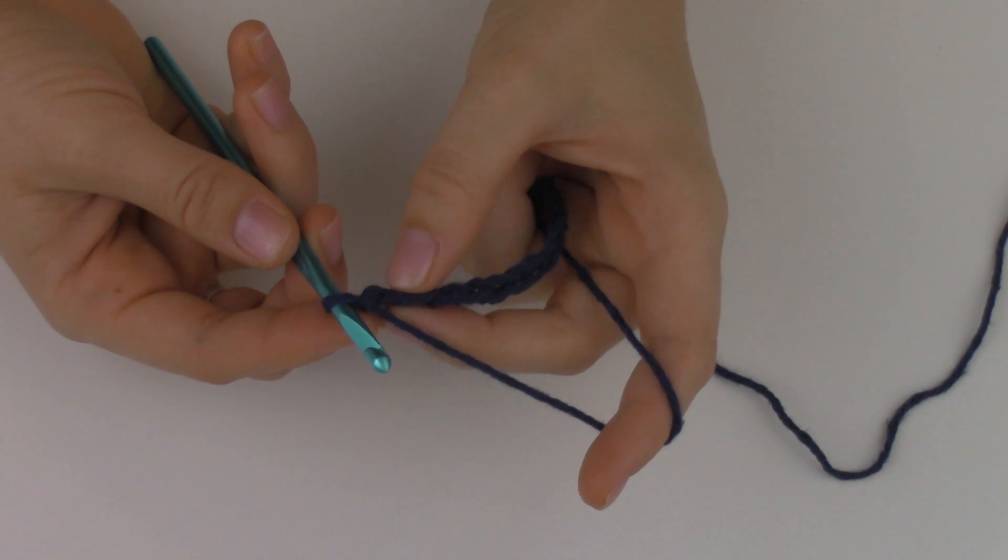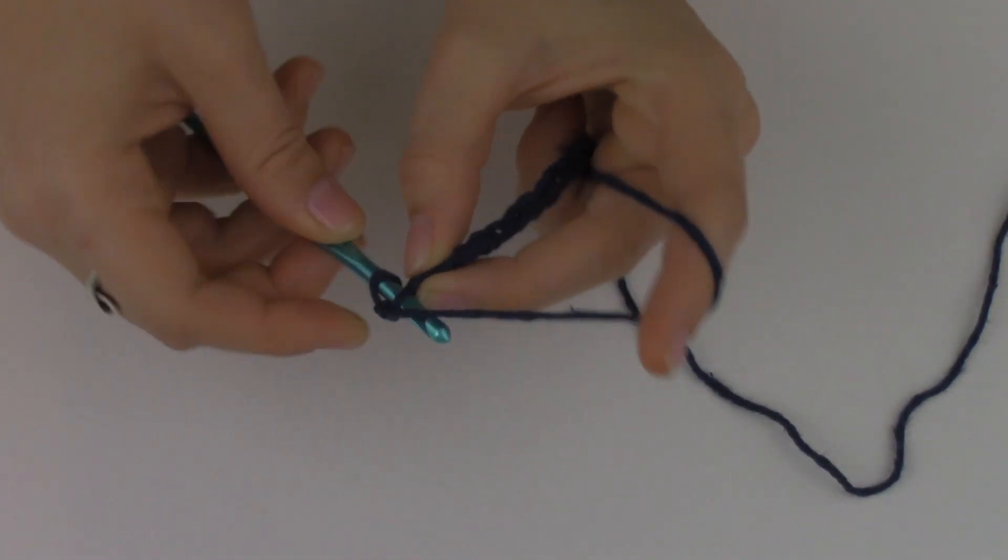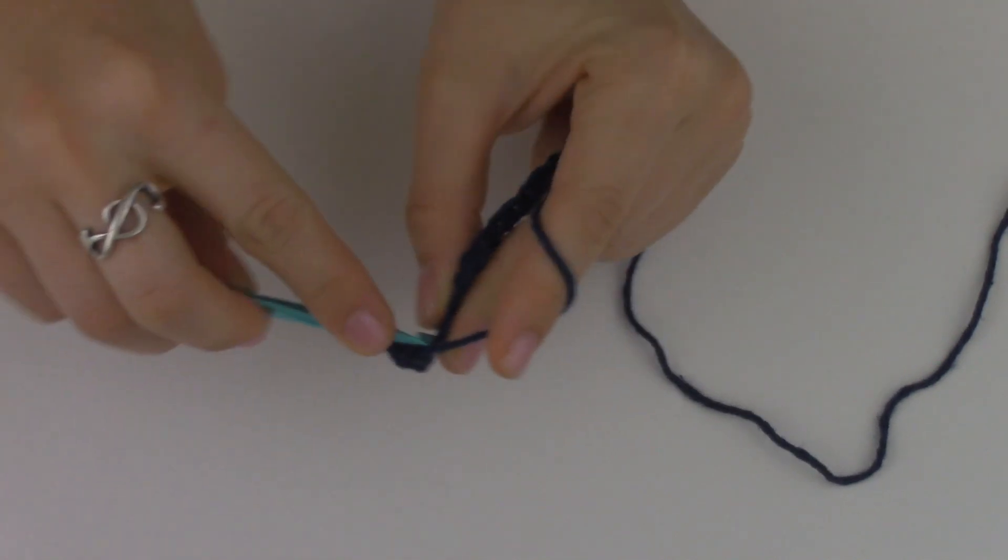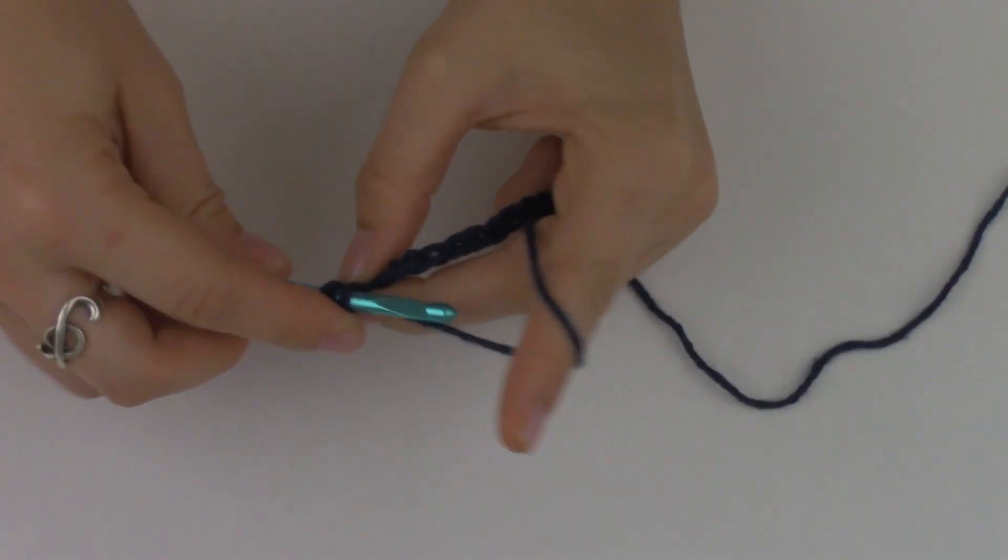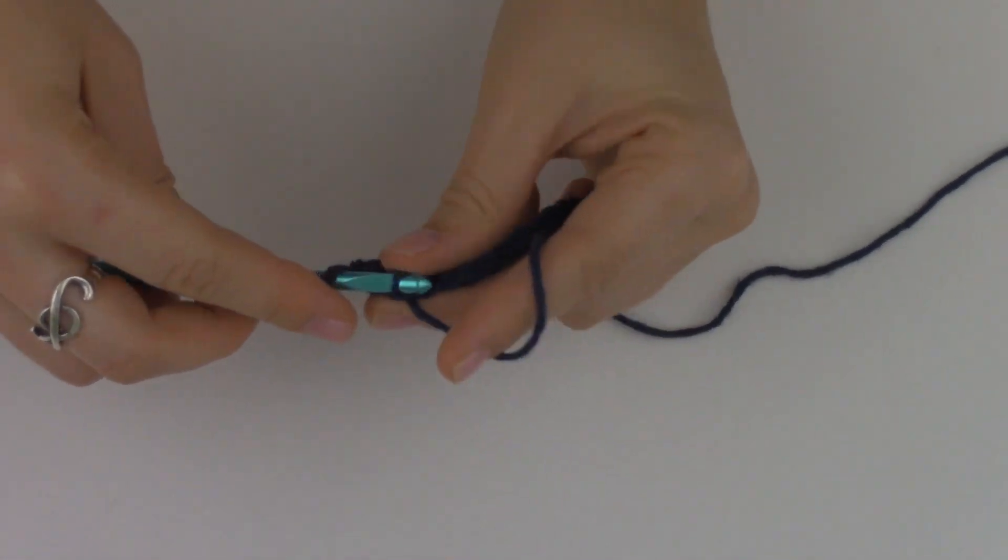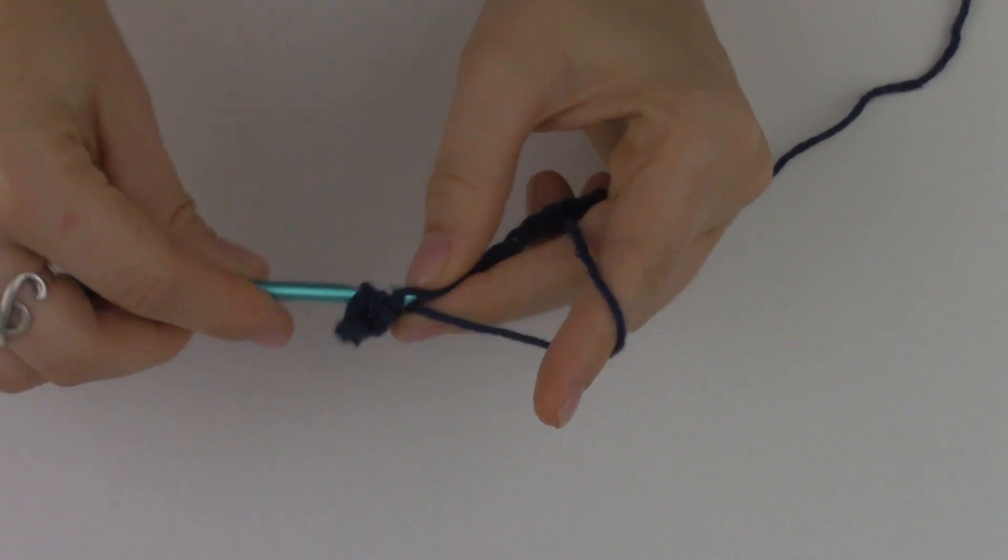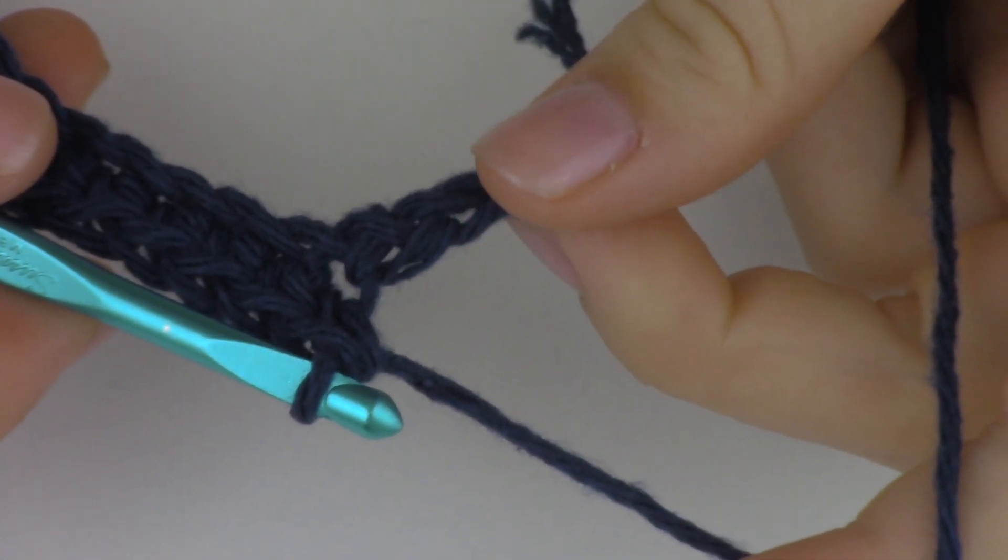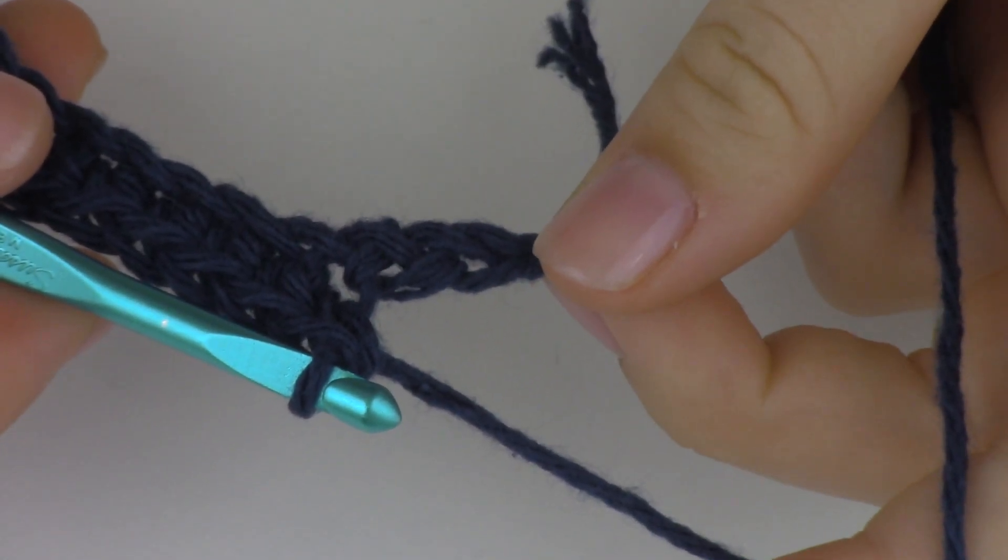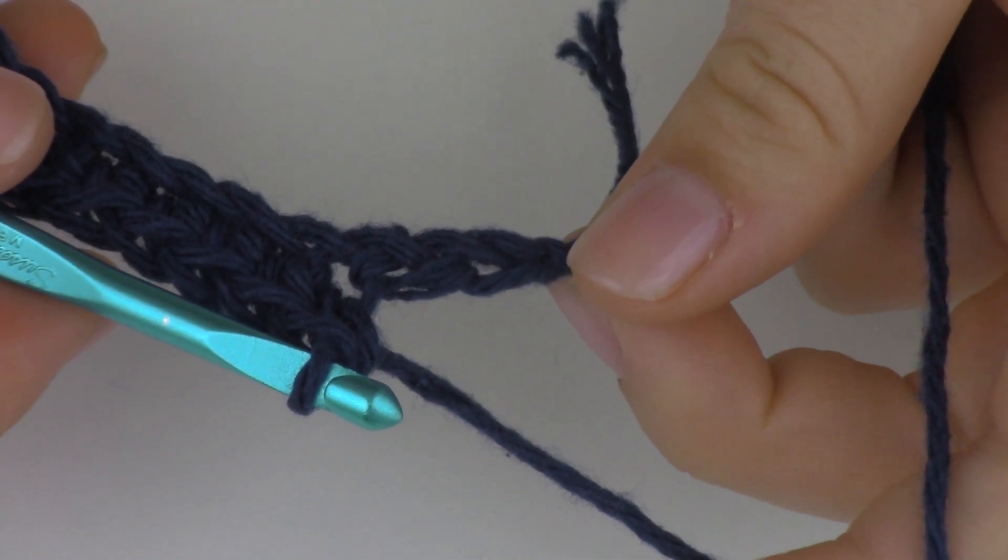Now what I'm going to do is single crochet 2 times into the 2nd stitch from my hook. So 1 single crochet and 2 single crochets. And then I'm going to single crochet all the way down and I'm going to stop 2 stitches before the end. I stopped 2 stitches before the end.